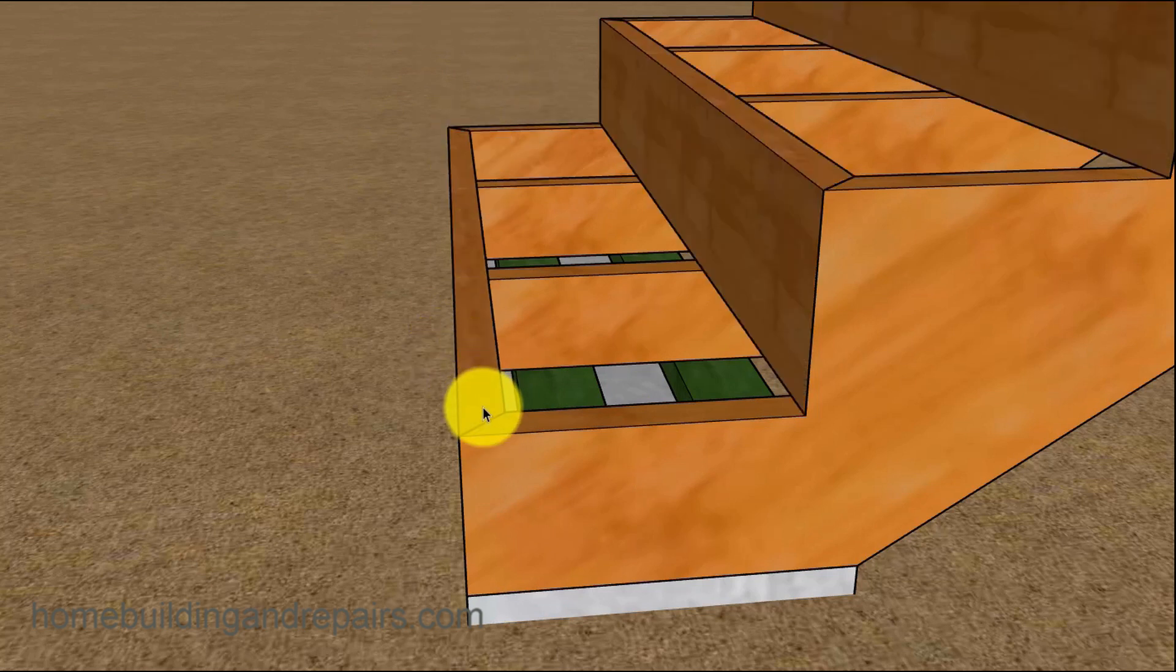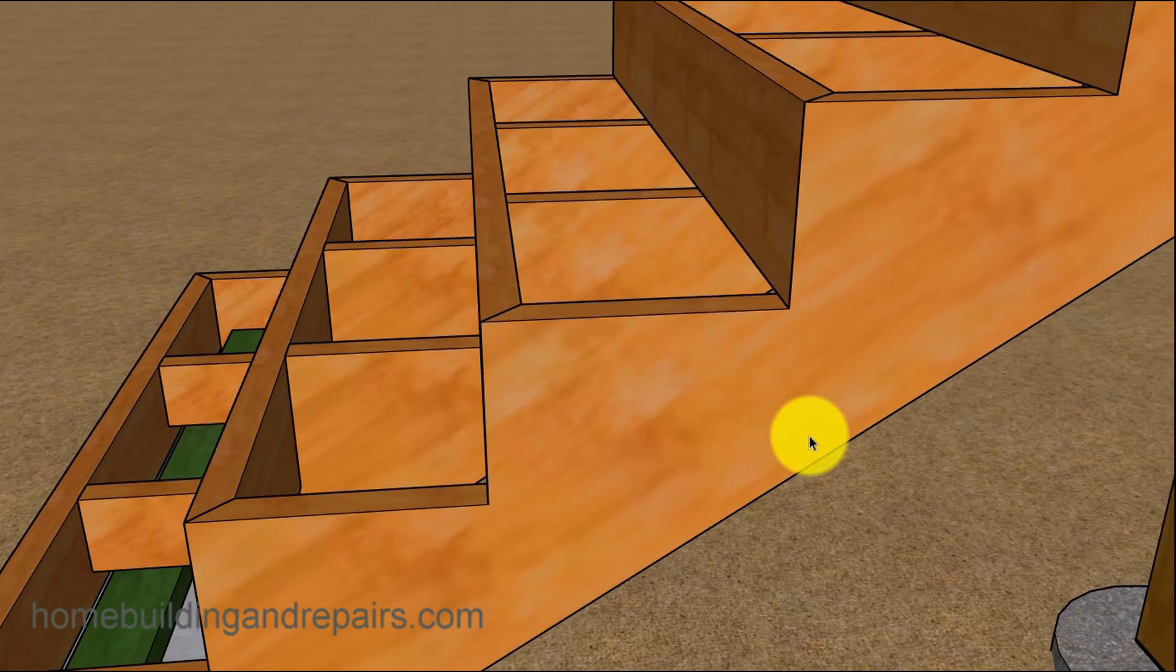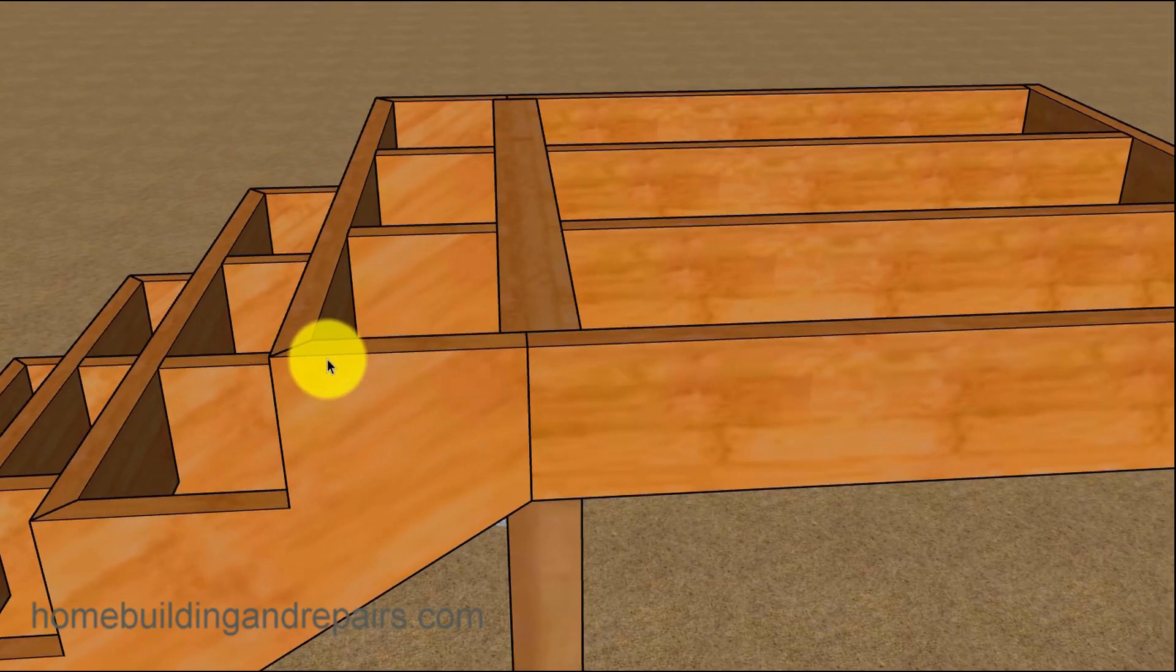Then there are the risers. Depending on what risers you're going to use, two-bys or one-bys, that would also affect the miter and what you would be doing here. But we're just going with two-bys here, two-by-eights. Seven inches, seven and a half inch rise, something like that, and an 11-inch step. Kind of gives you an idea here what we're doing.